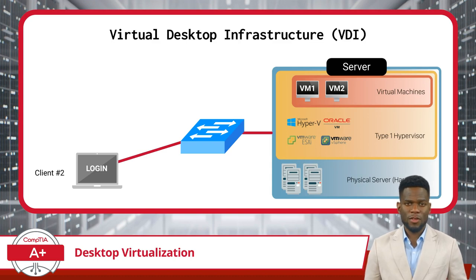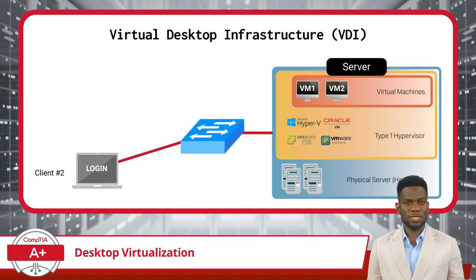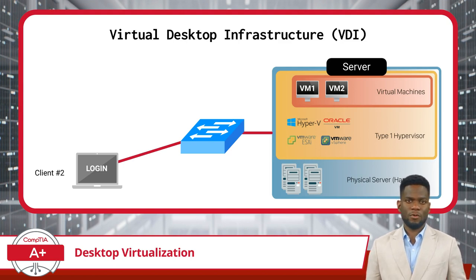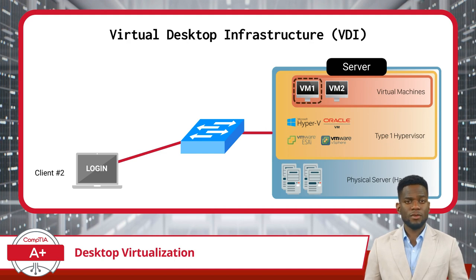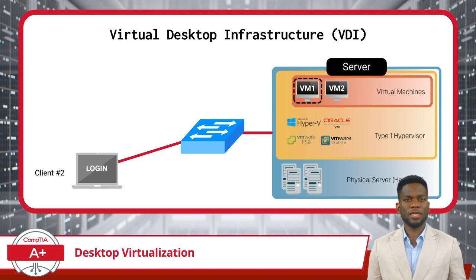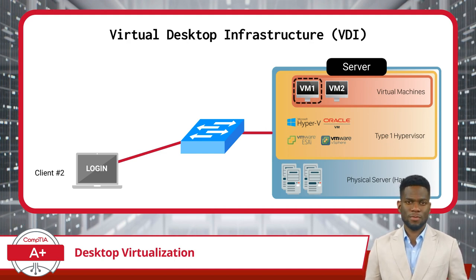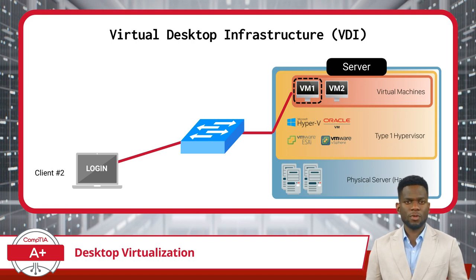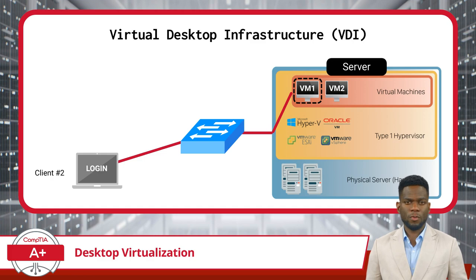The program then communicates with the server, saying someone wants to use their virtual desktop — can you help them out? The server looks up your details and locates the virtual machine that contains your virtual desktop, and sets up a special connection just for you. And that's how a connection works in VDI. It's like having your personal computer stored remotely that is available whenever you need it.